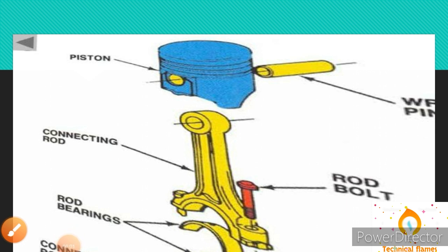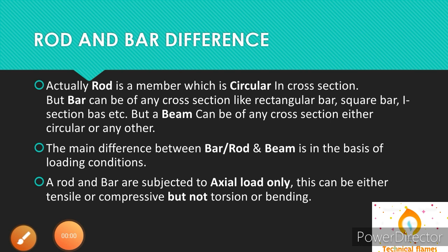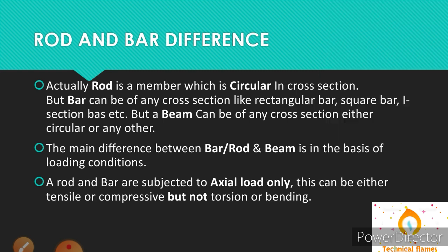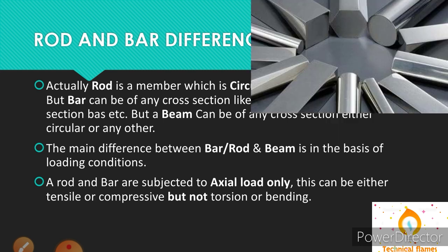Now I think you probably understand the difference between rod, shaft and axle. So here is one bonus thing for you — let's talk about the difference between rod and bar. Actually, a rod is a member which has a circular cross-section. But a bar can be any cross-section, like a rectangular bar, square bar, and eye-section bar, etc.